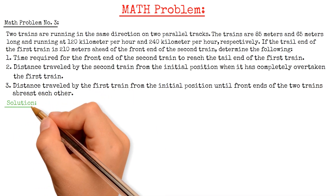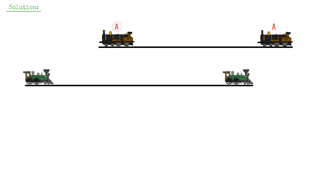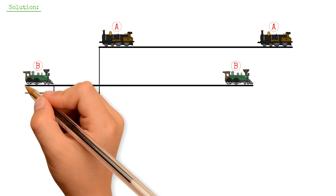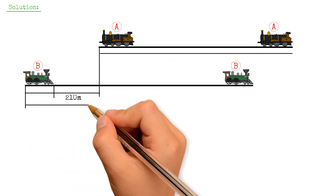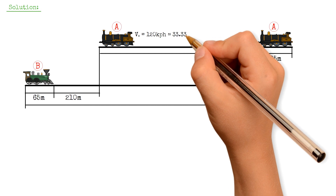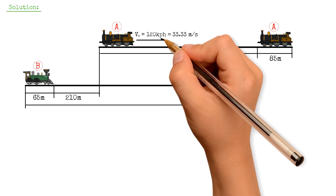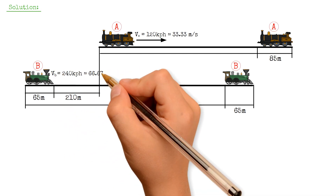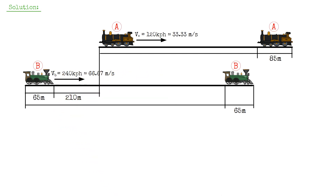To solve these, we will further illustrate the problem, and we will call the first and second train as Train A and Train B. In the initial position, the distance between the tail end of Train A and the front end of Train B is 210 meters. The lengths of Train A and Train B are 85 meters and 65 meters respectively. The velocity of Train A is 120 km/h or 33.33 m/s, and the velocity of Train B is 240 km/h or 66.67 m/s. D_A is the distance traveled by Train A from the initial to final position, and D_B is the distance traveled by Train B from the initial to final position.